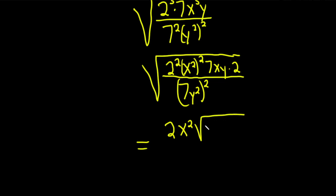Then we'll have a square root left: 2 times 7 is 14, xy. And then on the bottom we're going to have 7y squared.